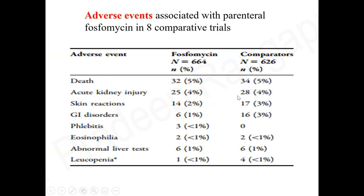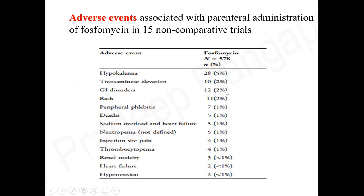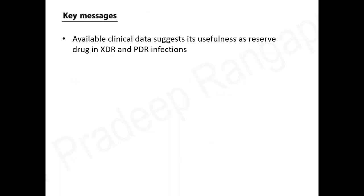Regarding adverse events, acute kidney injury was similar to comparator antibiotics, as were GI disorders. The side effect profile was not hugely different from other antibiotics used for MDR infections. The predominant specific adverse effect was hypokalemia in 5% of patients, mild elevation of liver enzymes in 2%, and GI disorders such as nausea and vomiting in 2%, along with rash. Hypokalemia is the key adverse effect to monitor when using phosphomycin.